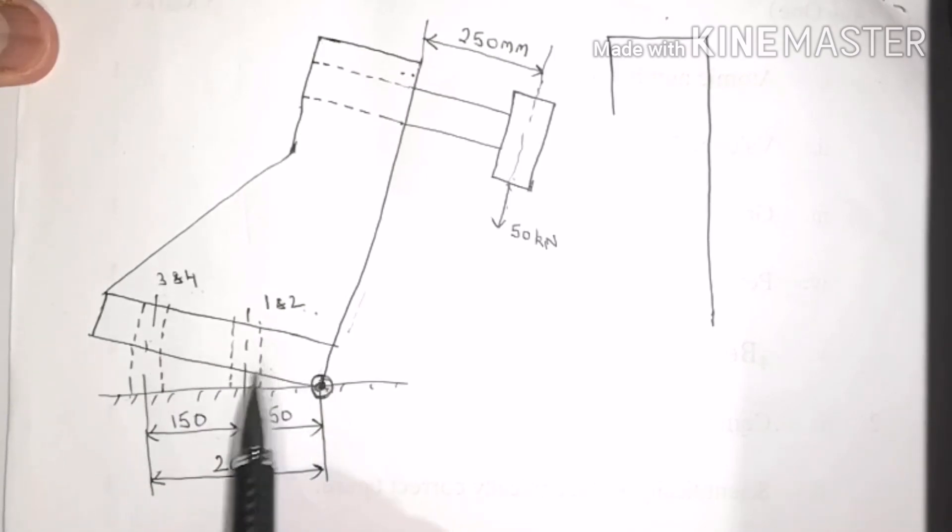In the question, it is given that from the fixed point, the distance of bolts 1 and 2 is 50 mm, and the distance of bolts 3 and 4 from this axis is 150 mm. So the total distance of bolts 3 and 4 from this point will be 200 mm.